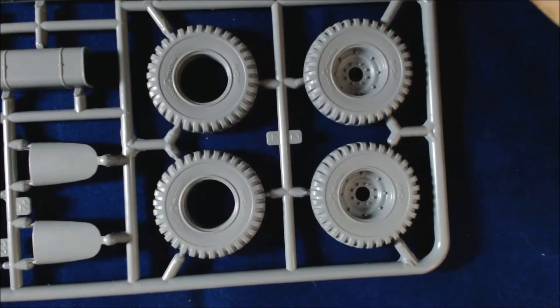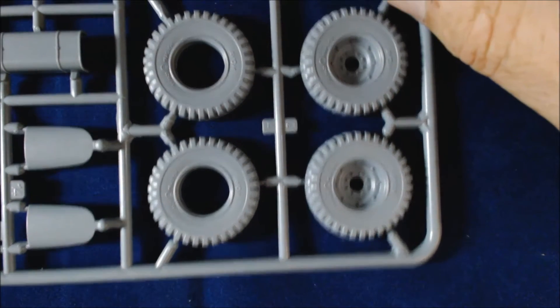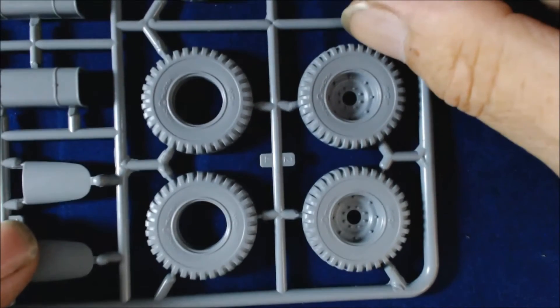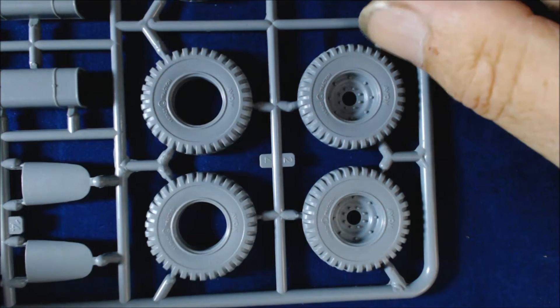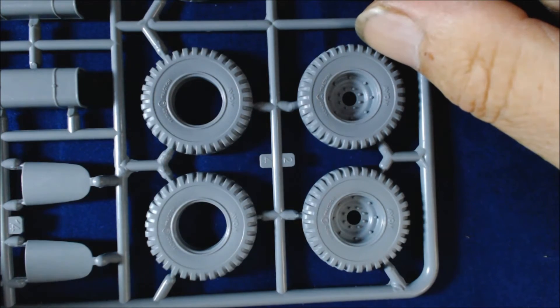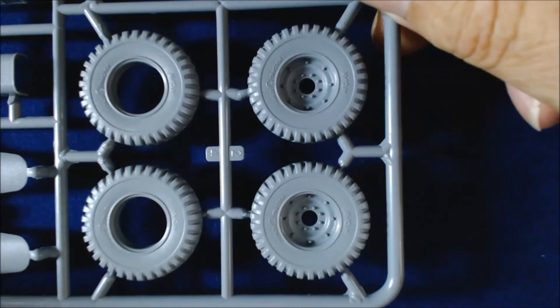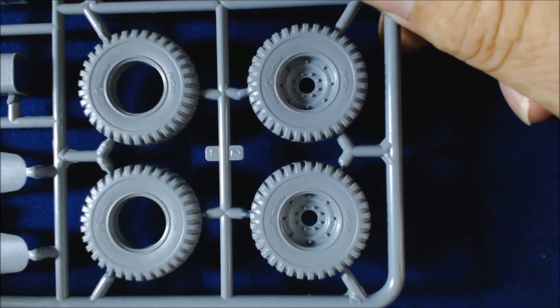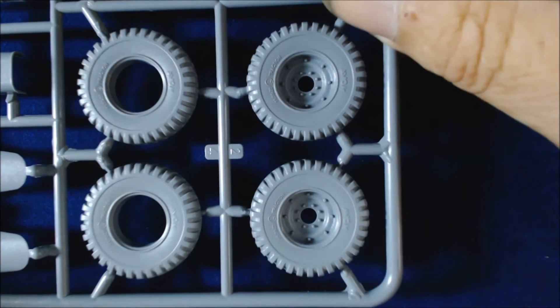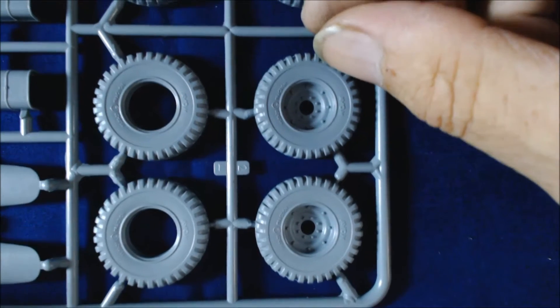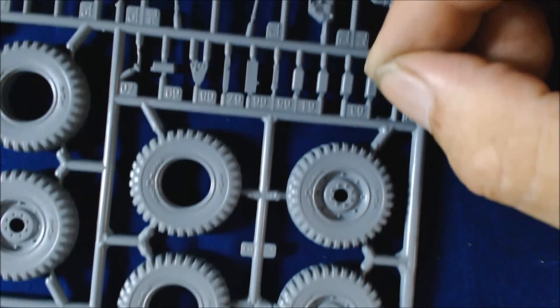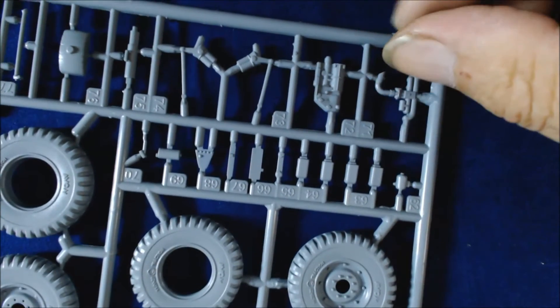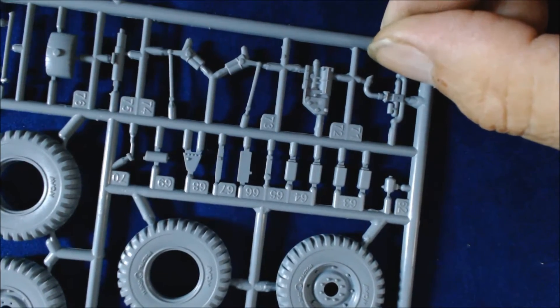The wheels are in two parts. I've put quite a few of these together, they do go together nice. The seam line comes off very easily with a file, just run around the center. They've even got the logo, the Avon logo on it. Everything is nice and clean, all the small parts are nicely detailed.